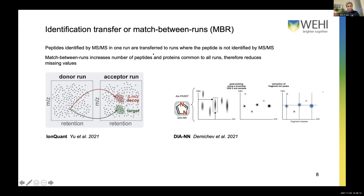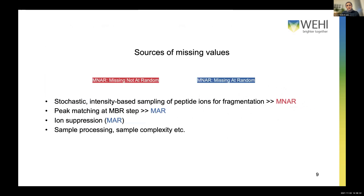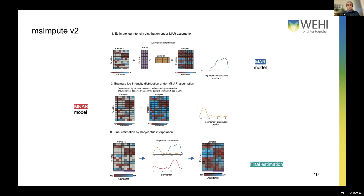The identification transfer idea is done to increase the number of peptides we can detect commonly across runs. However, if there is a misassignment going on, this gives rise to another type of missing value, which we call missing at random. To summarize: stochastic intensity-based sampling of peptide ions for fragmentation results in missing not at random — it's intensity dependent — whereas peak matching in match-between-runs likely results in a missing at random pattern. There are also experimental factors that contribute to missingness, such as ion suppression, where the signal for a peptide is suppressed in the presence of other peptides eluting at the same time.